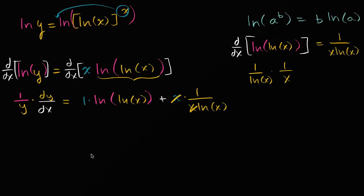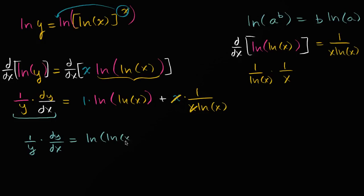That x and that x cancel out. So we are left with: one over y times dy/dx is equal to the natural log of the natural log of x, plus one over the natural log of x. Now to solve for the derivative, we can multiply both sides by y.